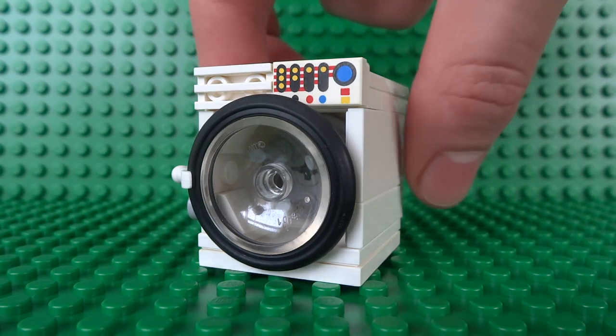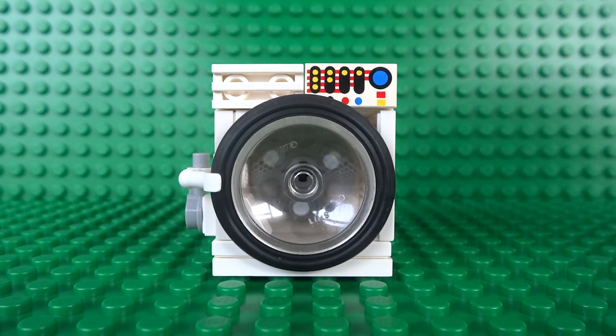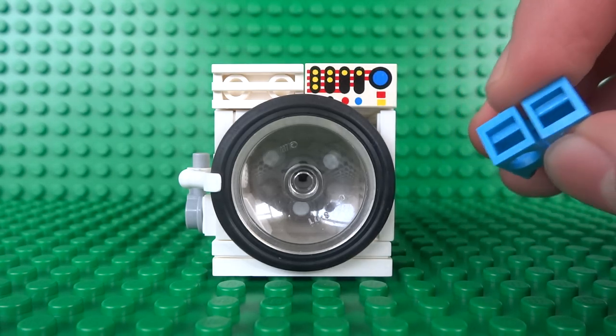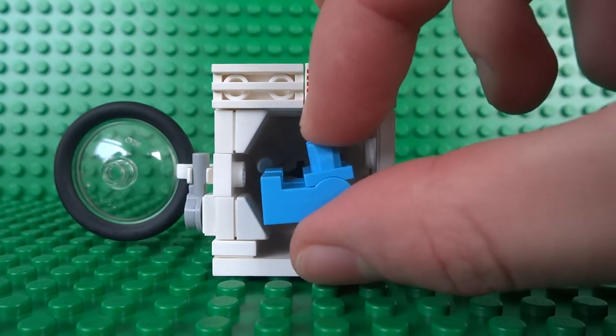So first let's see how it works. Before we begin we'll need to grab some laundry that we want to wash so I'll be washing these minifigure trousers and then you can just open up the door to the washing machine to insert your laundry.